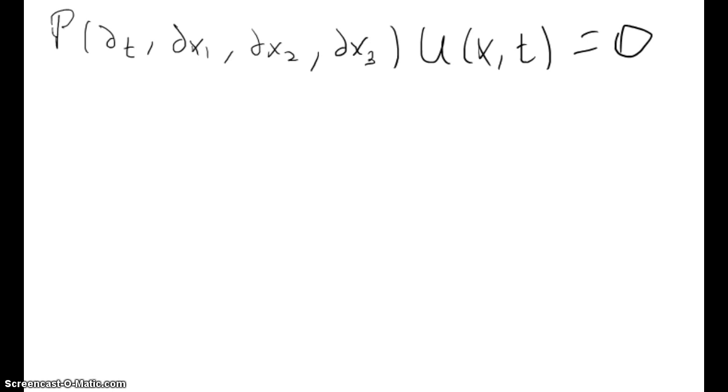Let's suppose that we look for plane-wave solutions. Let's say u is equal to A multiplied by e to the i(kx minus omega t), where A is the amplitude, k is the wave number, omega is the frequency, and k multiplied by x is k1 multiplied by x1 plus k2 x2 plus k3 x3.